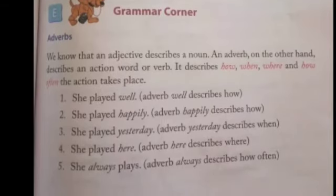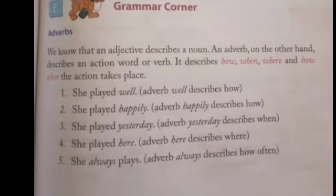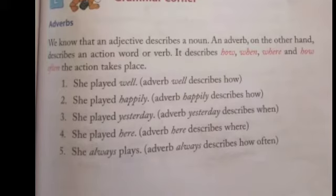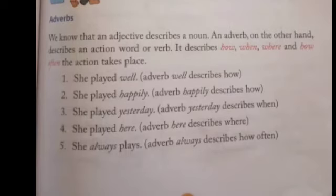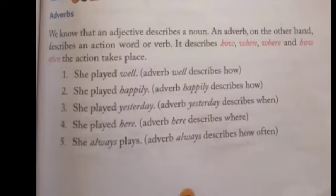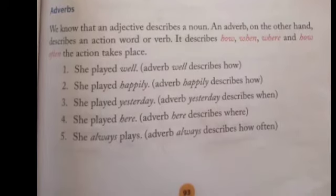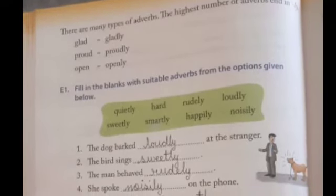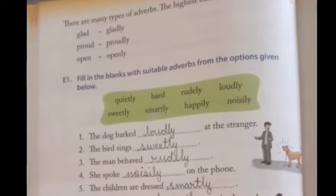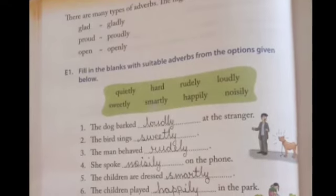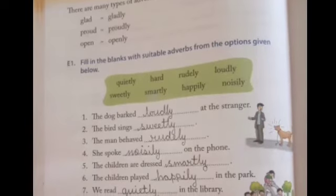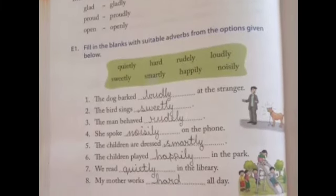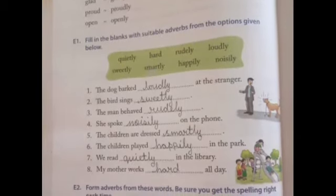We know that an adjective describes a noun. An adverb, on the other hand, describes an action word or verb. It describes how, when, where, and how often the action takes place. Adverbs are an important part of the eight parts of speech: noun, pronoun, verb, adverb, adjective, conjunction, preposition, and interjection. Without parts of speech, we can't write any sentence. Adverbs tell us more about other words, usually verbs. For example: slowly, happily, really, softly, kindly, etc.